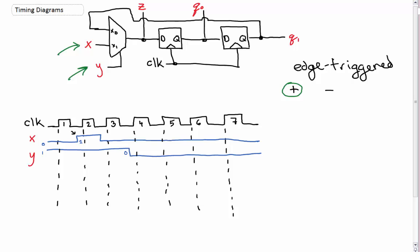Anyway, edge-triggered. Edge-triggered means that an action happens at the edge of a clock pulse, and this is why we have to figure out if it's positive or negative edge-triggered. If it's negative edge-triggered, it will trigger on the down edge when the pulse comes down. But since our circuit here is positive edge-triggered, our trigger is going to happen at the dotted lines — where the pulse goes up. So as the pulse rises, we are triggering an action, and this is where our pulses will come in.